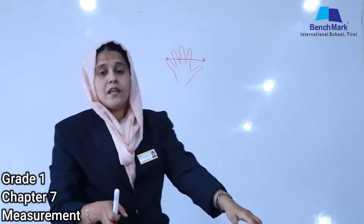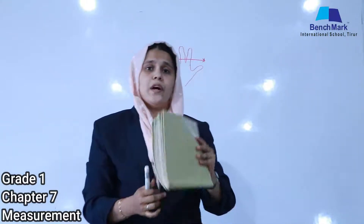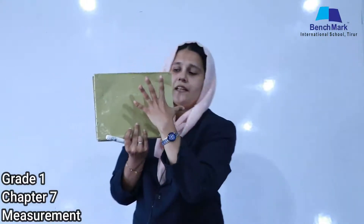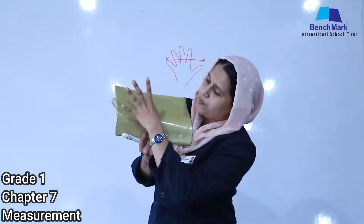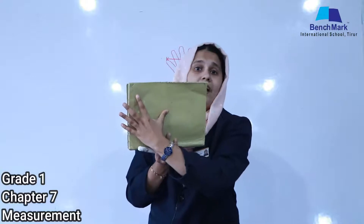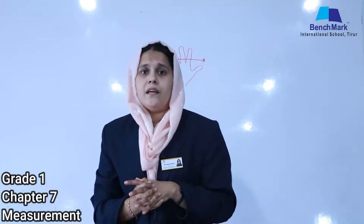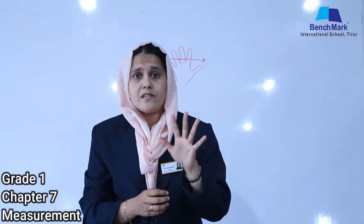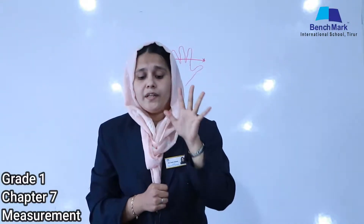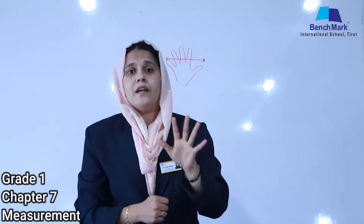How can we measure the length of the textbook using a hand span? We know it is nearest to two — about one and a half hand spans. Now try to measure the length of your study table, your book, your pencil, etc. You also have to trace your hand span in your textbook page number 101.